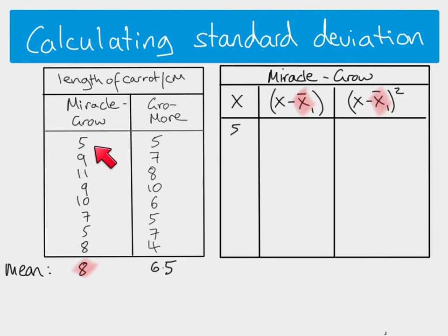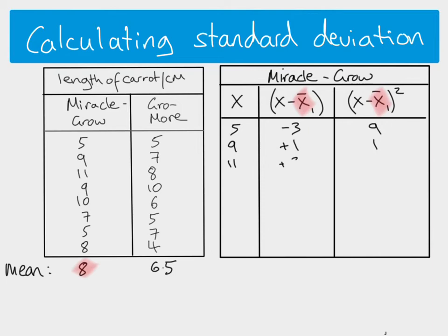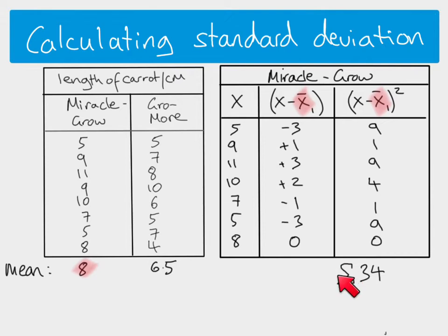The first thing you do is take each data point in turn. First data point is five: we do five minus the mean, so five minus eight gives minus three, and then we square it, giving nine. The next data point is nine: nine minus eight gives one, and one squared gives one. You do that for every single data point in the Miracle Grow sample, and then this symbol means sum — so you add all of those together: the sum of (X minus X-bar) squared equals 34.